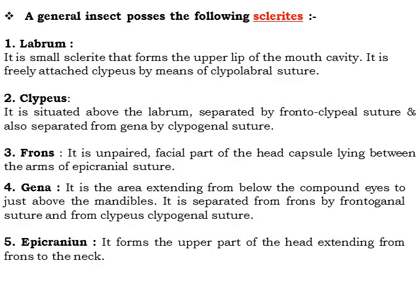A general insect possesses the following sclerites. First is the labrum — a small sclerite that forms the upper lip of the mouth cavity, attached to the clypeus by the clipo-labral suture. Second is the clypeus, situated above the labrum and separated by the frontoclypeal suture, and separated from the gena by the clipo-genal suture. The frons is an unpaired facial part of the head capsule lying between the arms of the epicranial suture — the Y-shaped cleavage line. The gena is an area extending from below the compound eyes to just above the mandible, separated from the frons by the frontoclypeal suture and from the clypeus by the clipo-genal suture. The epicranium forms the upper part of the head extending from the frons to the neck.